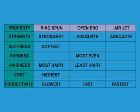In spun yarn manufacturing, ring spinning systems make the strongest, softest, and widest range of yarn counts. Open-end spinning makes yarn at a significantly faster rate than ring spinning, is more even, has lower skewness problems, but has lower strength and a narrower yarn count range.